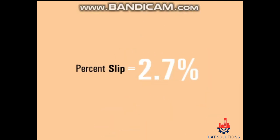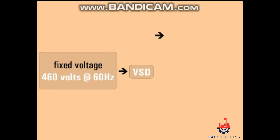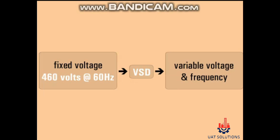The slip is not affected by the design of the VSD. With this information, we can now determine the correct voltage to frequency ratio for a particular motor. The variable speed drive accepts a fixed voltage and frequency of 460 volts AC at 60 hertz and supplies a variable voltage and frequency to the motor.